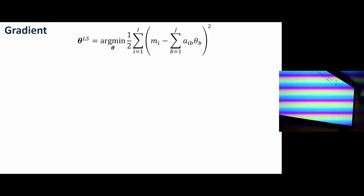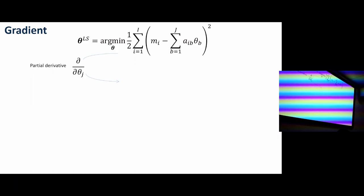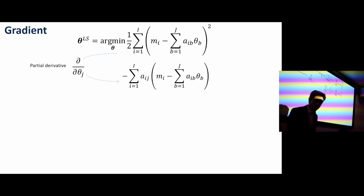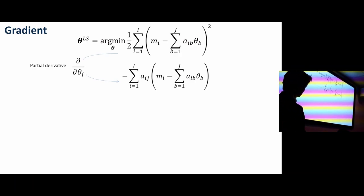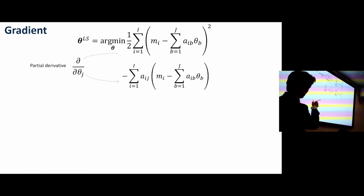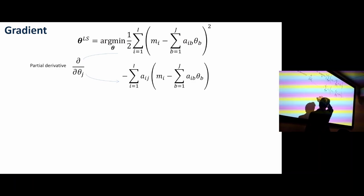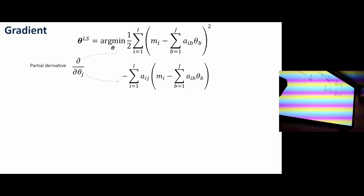Our objective is to find the theta that minimizes that. We're going to take the partial derivative. The partial derivative of the cost function: 2 comes down the front, the half is gone. The derivative of A_ib theta_b with respect to theta_j is just A_ij. So that comes out the front by the chain rule of differentiation.